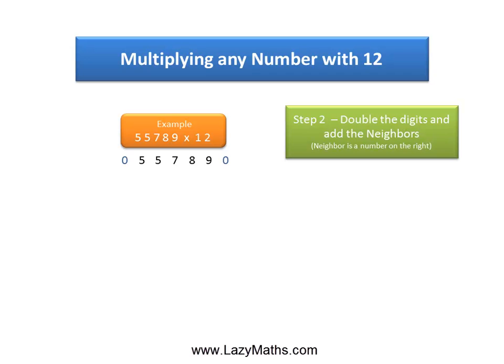The next step is to double the digits and add the neighbors, starting from the right side. In this case, the neighbor is the number on the right side.